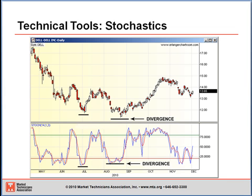We're going to take a look at a divergence. Note in July, price made a low and the stochastic made a low. Then between August and September, price went down and made a lower low while the stochastic oscillator made a higher low. That buy signal produced a very nice uptrend in price from roughly $12 to roughly $15. Those signals don't happen all the time, but when they do, they can be especially powerful and you should look for that as an opportunity.